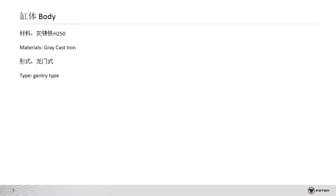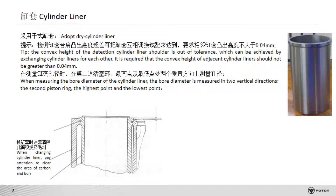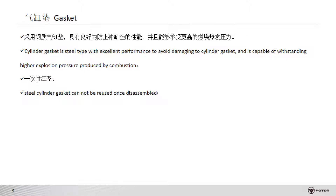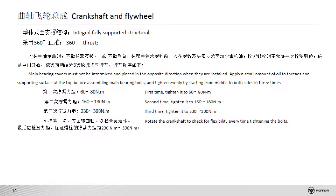The engine is of gantry-type grey cast iron structure and uses a dry cylinder liner. Pay attention to the protrusion of the cylinder liner. When measuring the bore diameter of the cylinder liner, the bore diameter is measured in two vertical directions. Disposable cylinder pads can be selected according to the amount of piston protrusion. The engine uses a fully supported structure with 360-degree support.